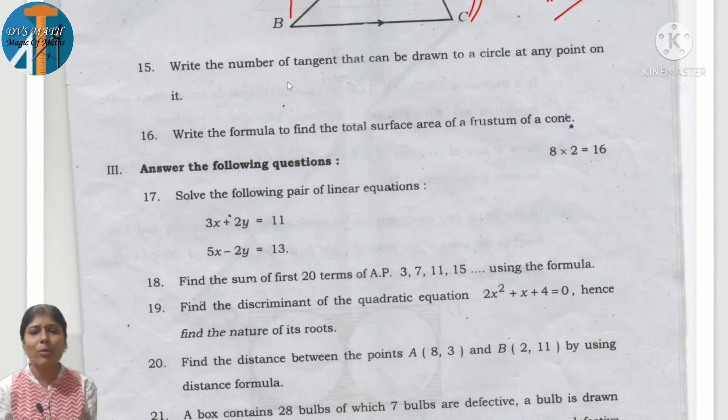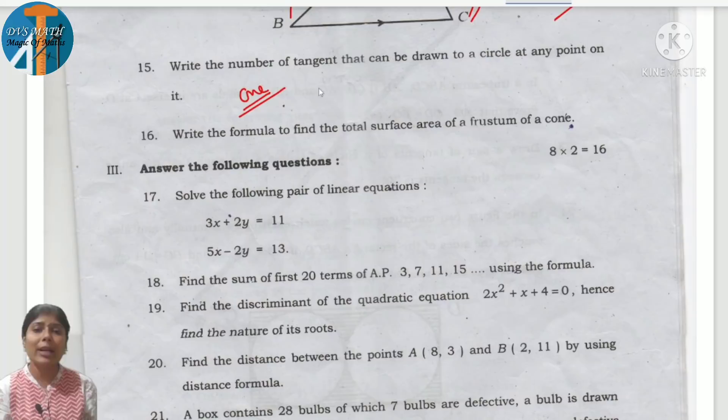Next question: write the number of tangents that can be drawn to a circle at any point on it. At one point, how many can you draw? One tangent you can draw. On a circle, infinitely many. Infinitely many tangents you can draw.